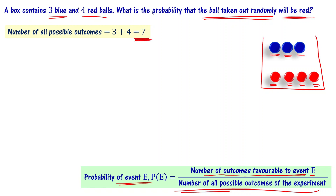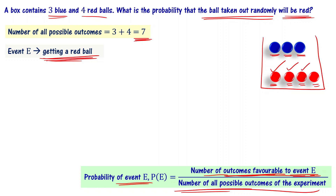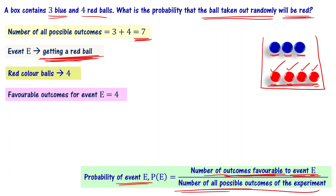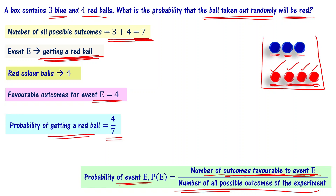Now, the number of outcomes favorable to event E: event E is getting a red colored ball. The outcomes favorable to event E are the red balls that can be picked out. Since there are four red colored balls, there are four outcomes favorable to this event. So the numerator is 4 and the denominator is 7. Therefore, probability P of E equals 4 divided by 7. The probability of getting a red colored ball is 4 by 7.